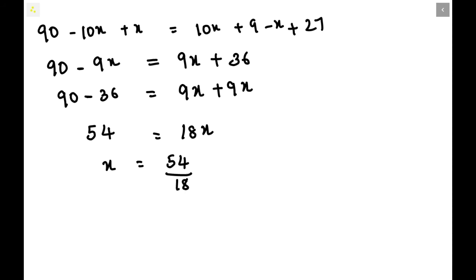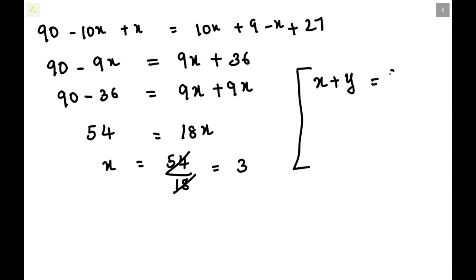From 54 equals 18x, bringing 18x to the denominator, x equals 54 divided by 18. In the 18 times table, 18 times 3 gives 54, so x equals 3. Recalling the first condition: x plus y equals 9.